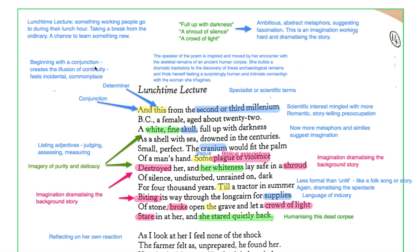So, let's get going. I've highlighted these first couple of words here. Let's just look at the first couple of lines. And this, from the second or third millennium BC, a female, aged about 22. I've highlighted these words because they just drop us straight into the poem.